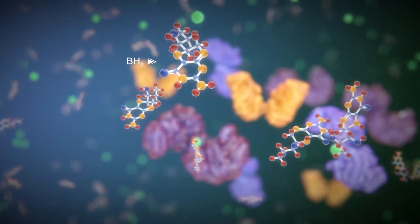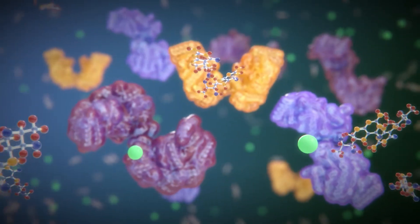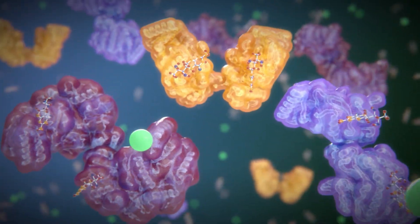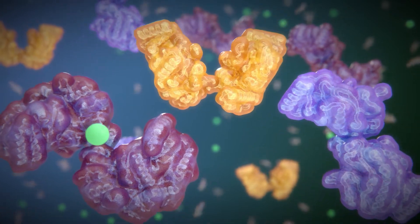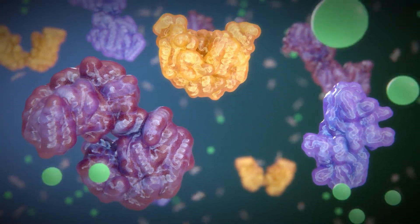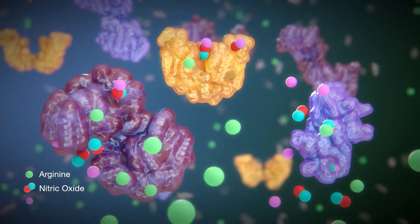The essential cofactor tetrahydrobiopterin or BH4 causes dimerization of NOS resulting in conversion of L-arginine to NO and citrulline.